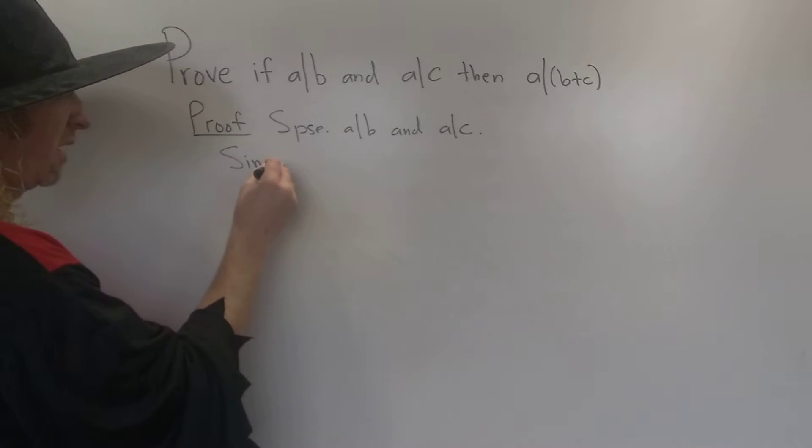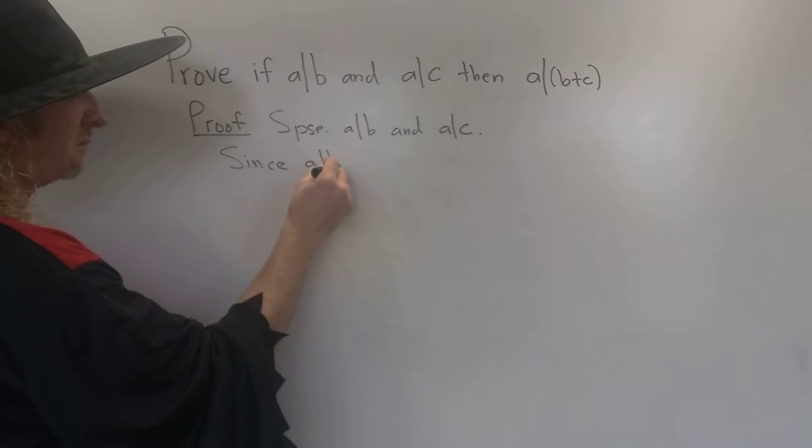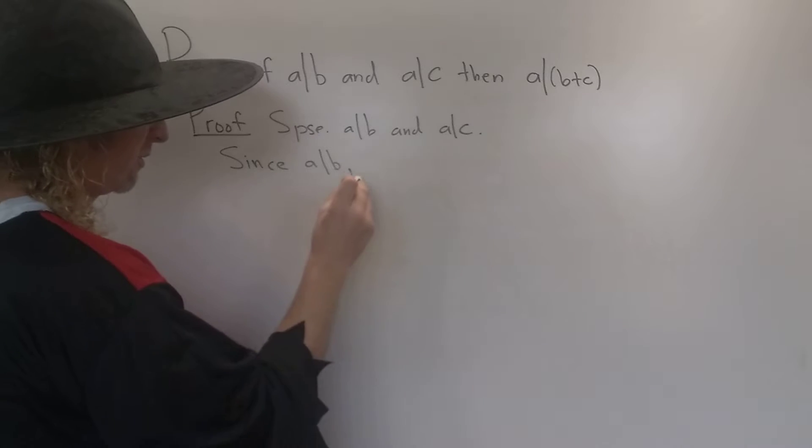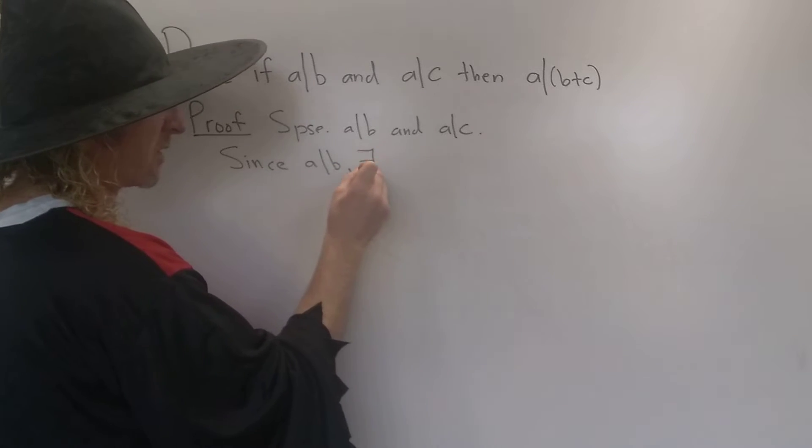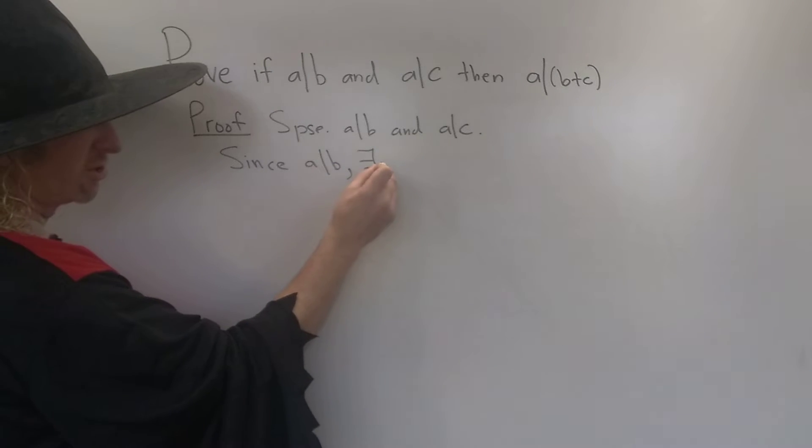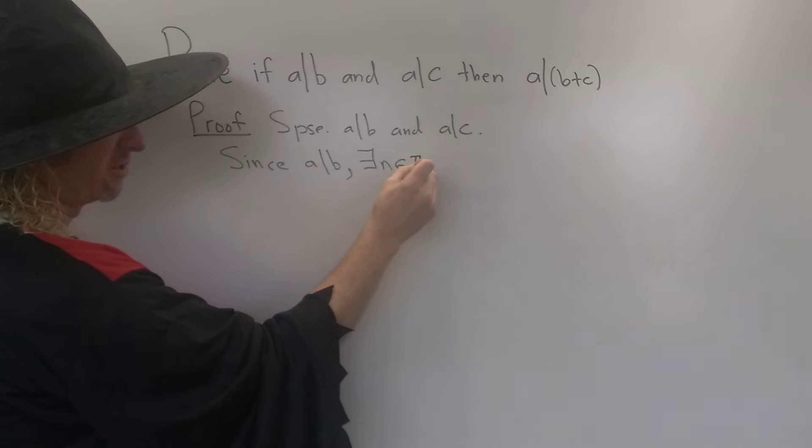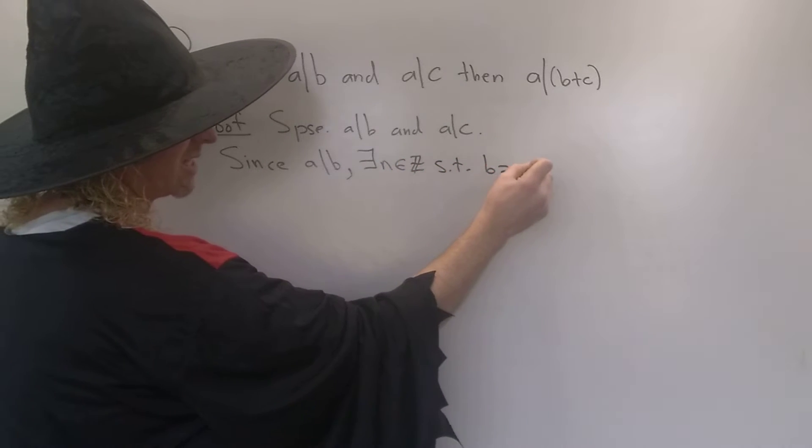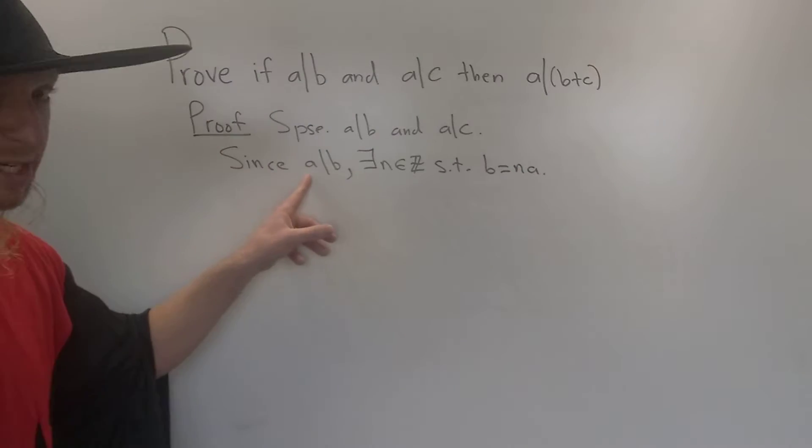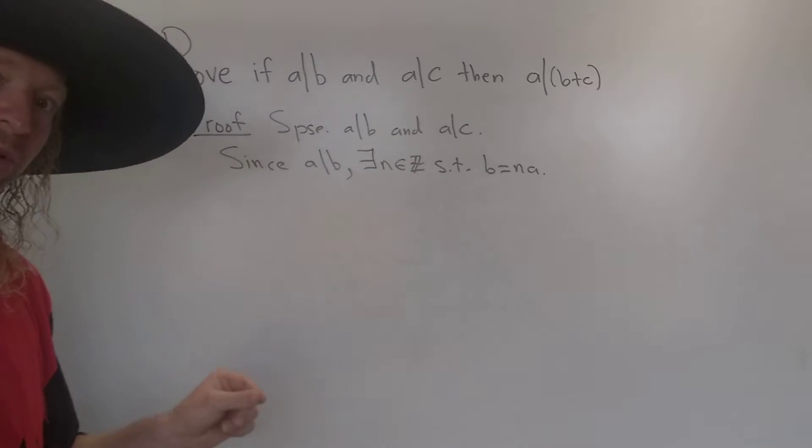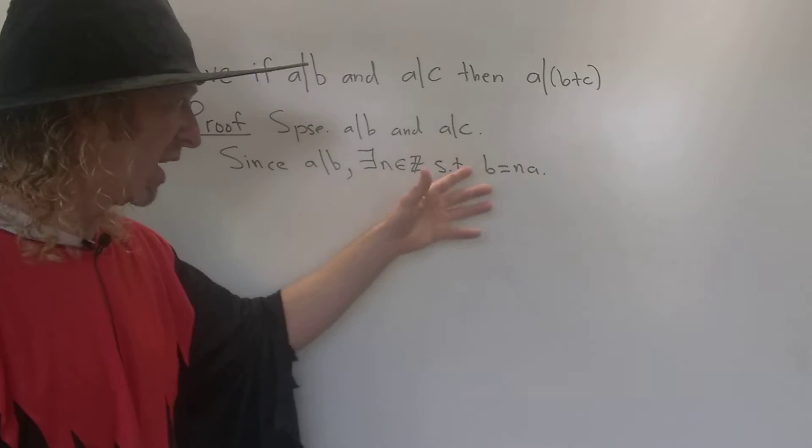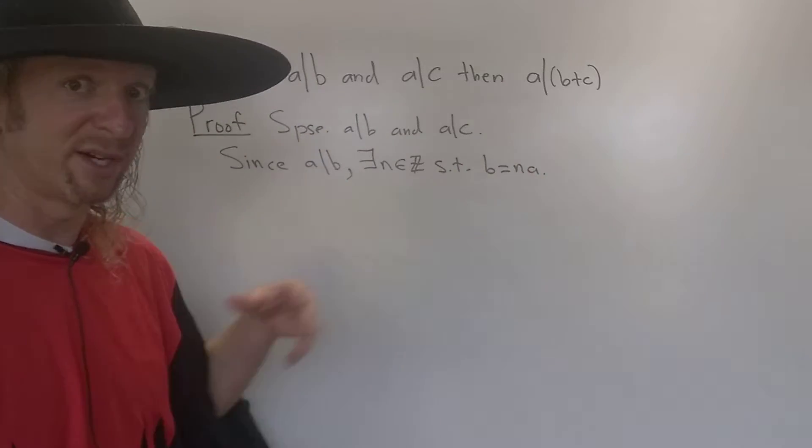So since A divides B, what does this mean? This means that B is a multiple of A. So this means that there exists an integer N in the set of integers, such that B is a multiple of A. So B is equal to N times A. A divides B means that B is a multiple of A. So B is equal to an integer times A for some integer N.